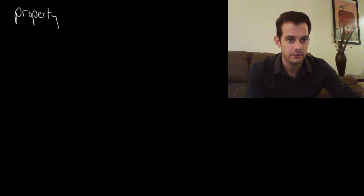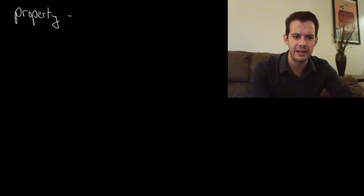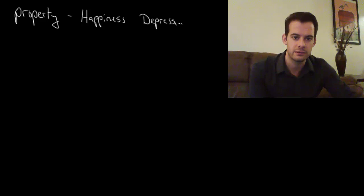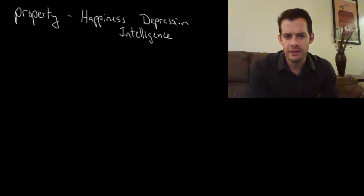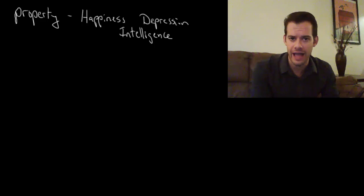I'm going to start with a property. So what is a property? A property is a general sort of concept that we want to investigate. Researchers might want to know about the property of happiness, or they might want to know about depression or intelligence. An important thing about properties is that we can't directly detect them. I don't have a happiness detector that's going to tell me exactly how happy you are.